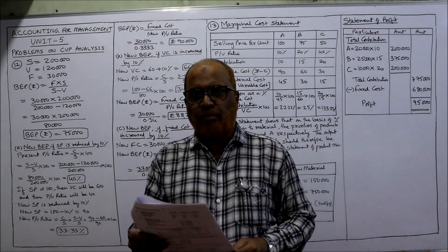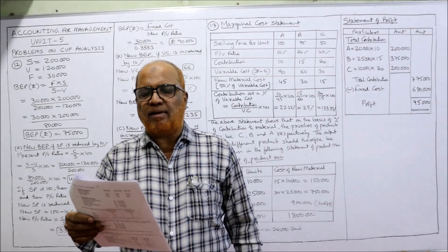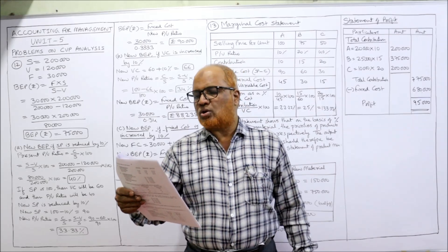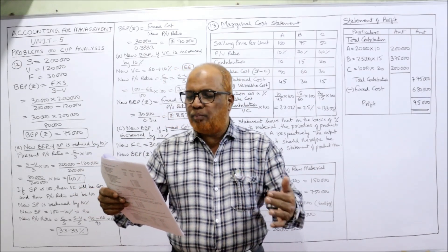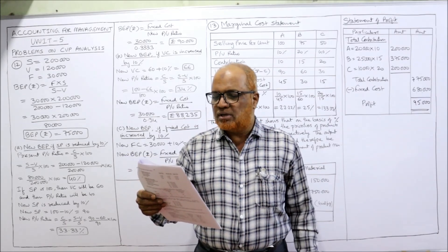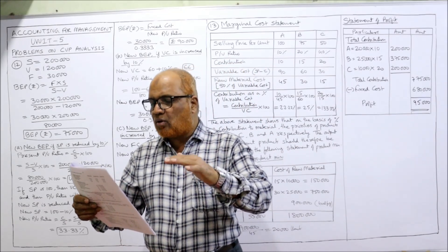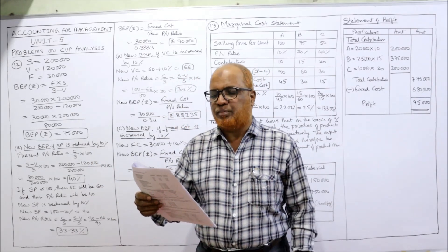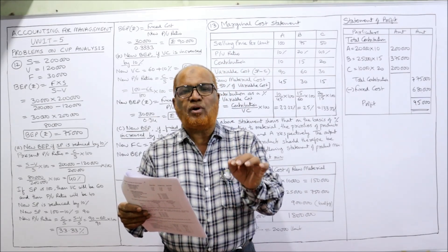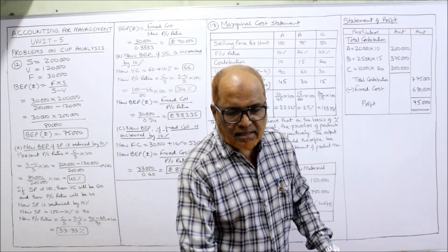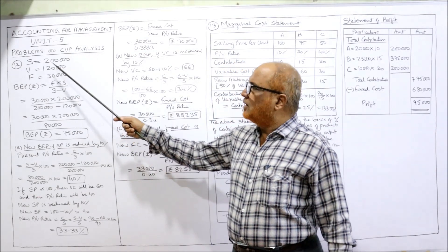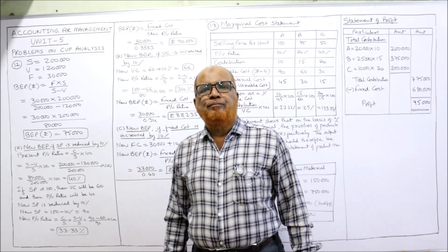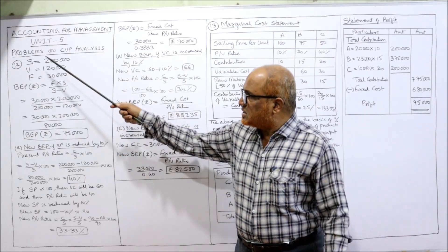Problem number 12: From the following particulars, calculate the break-even point. Sales: 2 lakh; variable cost: 1 lakh 20,000; fixed cost: 30,000. Also calculate the new BEP if selling price is reduced by 10%, new BEP if variable cost is increased by 10%, and new BEP if fixed cost is increased by 10%. First, without these changes, we calculate the present BEP.